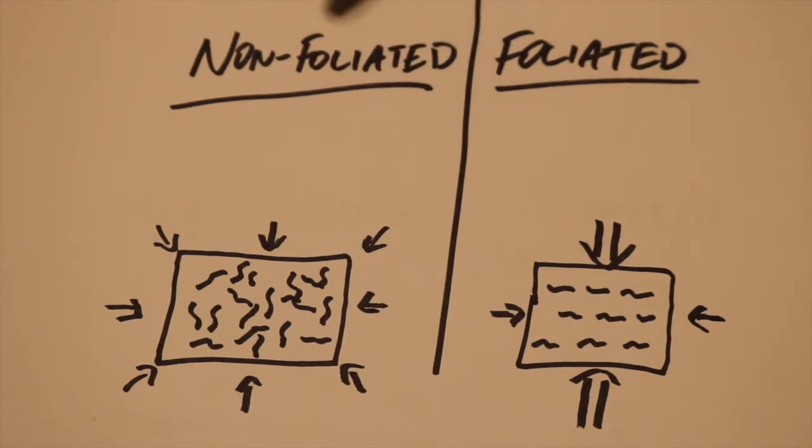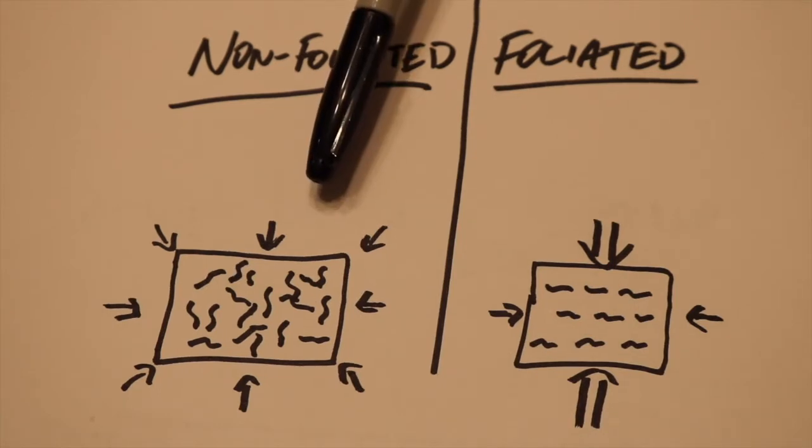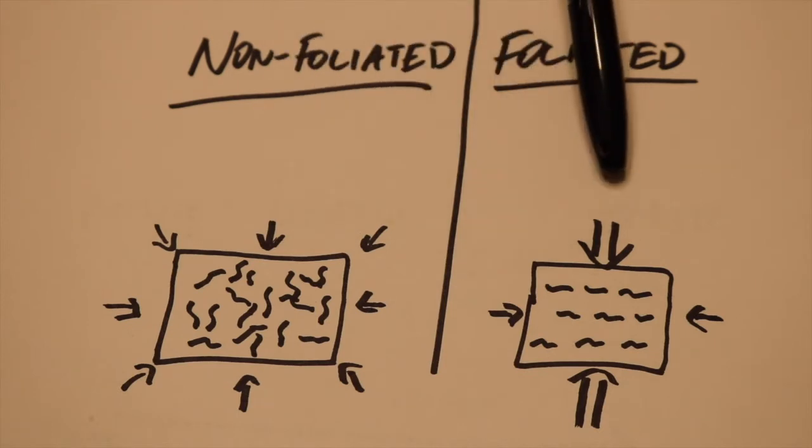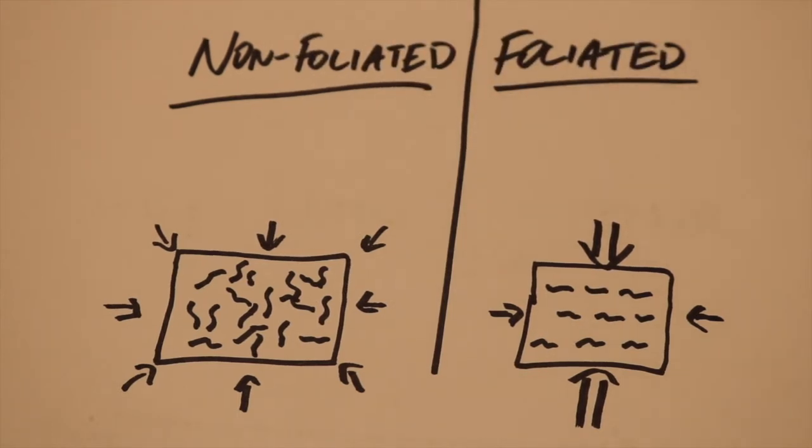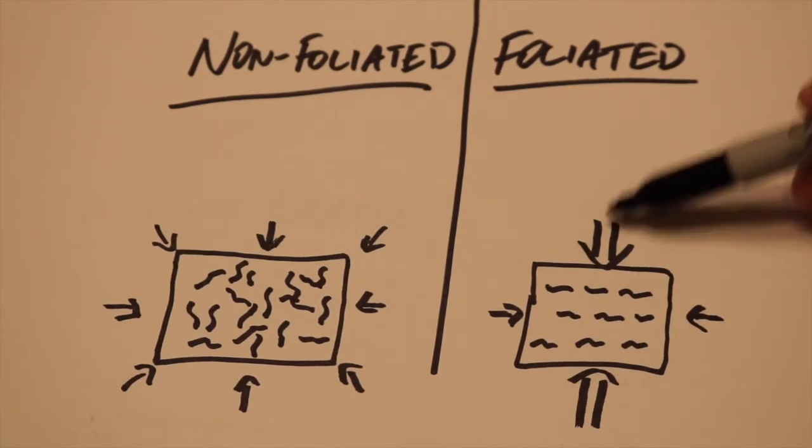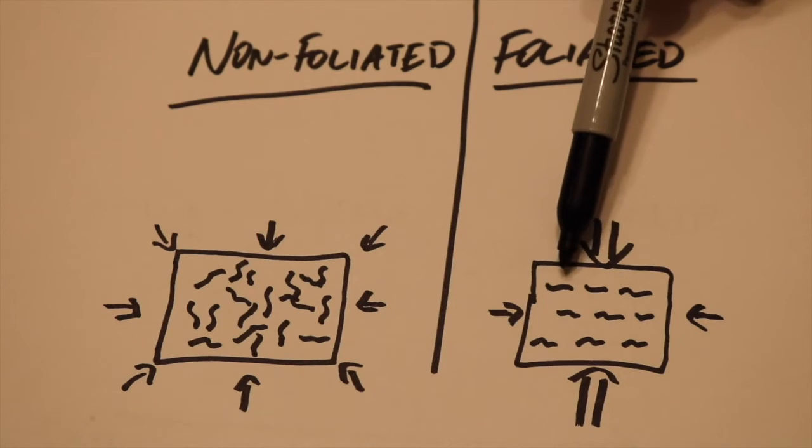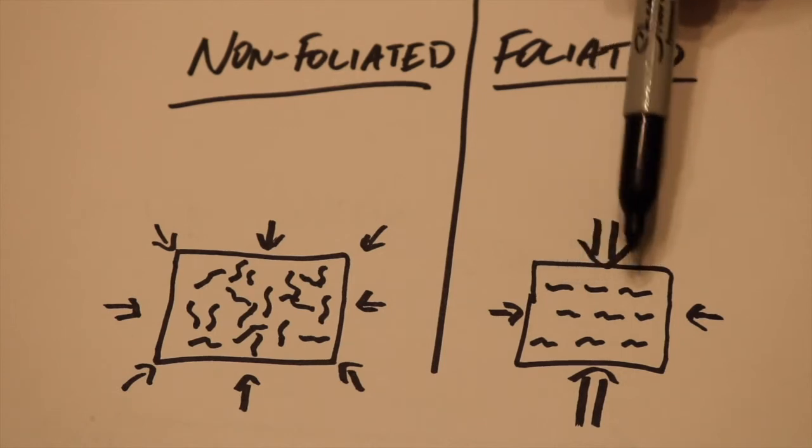Non-foliated rocks do not have any kind of preferential alignment of any minerals, so these rocks tend to have a texture that looks granular or massive without that characteristic parallel mineral grain alignment in the rocks. Whereas, foliated rocks, because it has pressures that are greater in one direction over the other, you can get a preferential alignment of some of these platy minerals.